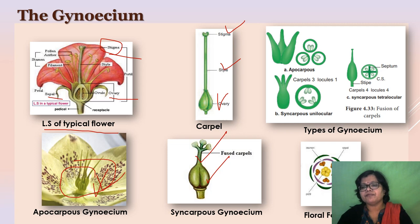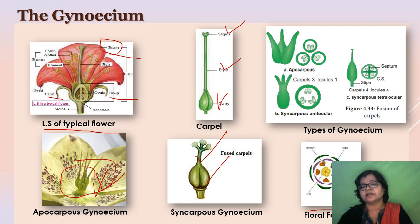The floral diagram is very important to describe the different parts of the flower. With respect to the mother axis, the different whorls are drawn in different circles. The outermost circle represents calyx, then the second innermost circle represents corolla, then androecium, and then the gynoecium. By observing the floral diagram, we can understand the structure of a flower.